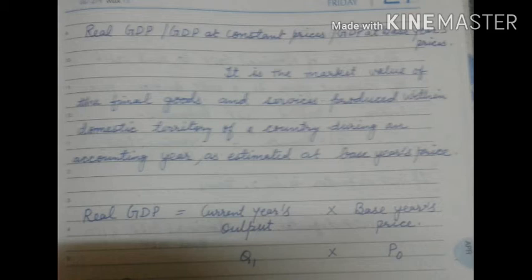So if we look at the difference between both formulas: in nominal GDP, we multiply current year's output by current year's price; whereas in real GDP, we multiply current year's output by base year's price. Output is always the current year's, but the prices differ — in nominal, price is current year's; in real, price is base year's. That is the major difference.